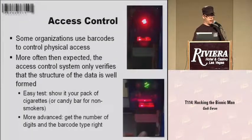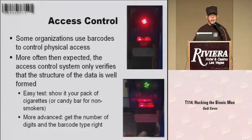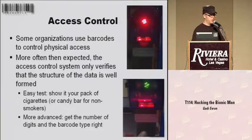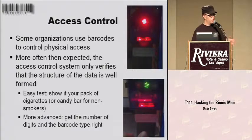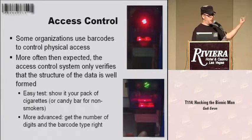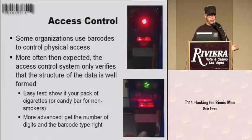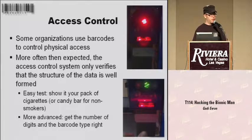Another thing people use barcodes for is access control. More often than you'd expect, the access control system only verifies that the structure of the data is nice — it can read a barcode, but it won't look at the content at all. It's a really easy test: when you have an access system that uses barcodes, just take your pack of cigarettes or whatever you have with a barcode on you and just scan it and see if the door opens. Don't be too surprised if it does, because that's really a regular case. You can also just get the right number of digits on your barcode and scan it and it will open the door.